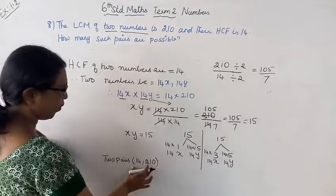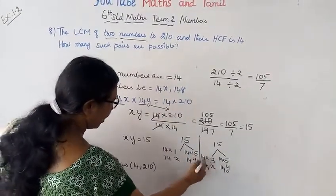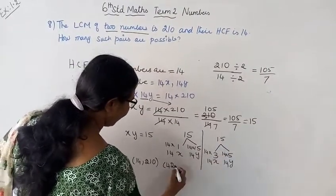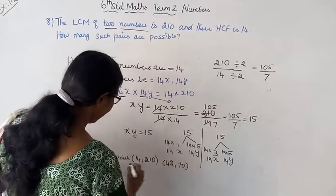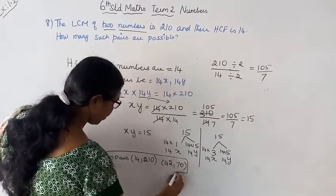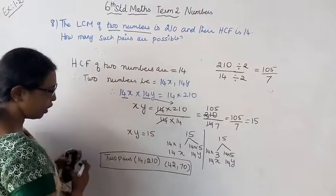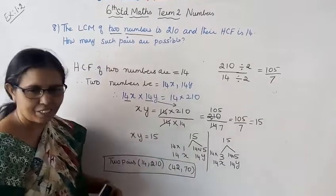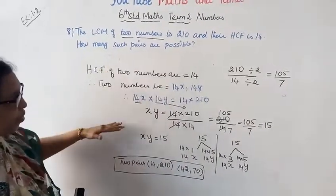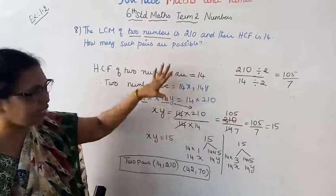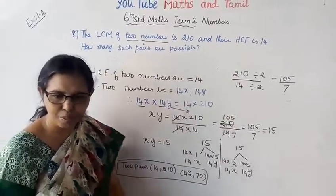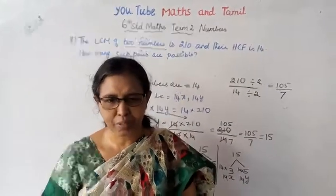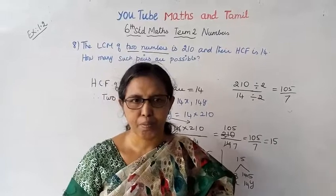This is our answer. The pairs are: 14 times 1 and 14 times 15 giving 14 and 210, and 14 times 3 and 14 times 5 giving 42 and 70. This is how we solve this. That is all for this sum — now look at this clip.